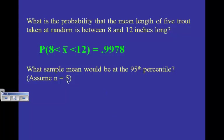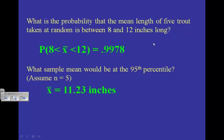What sample mean would be at the 95th percentile? In this case, instead of finding a probability we're finding a number — so we use inverse norm instead of normCDF. The area is 0.95, with a standard deviation of 1.4 divided by the square root of 5 and a mean of 10.2. The result: x-bar equals 11.23.